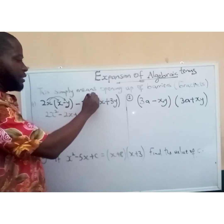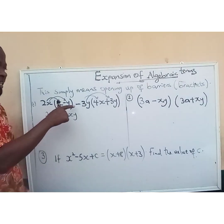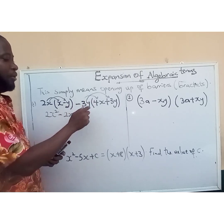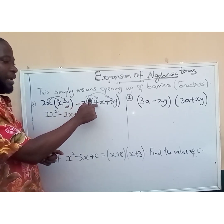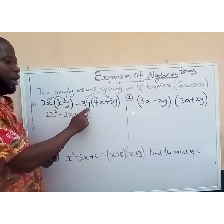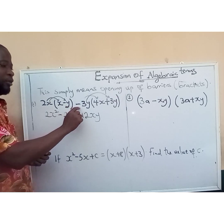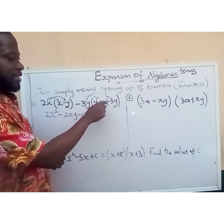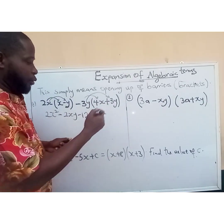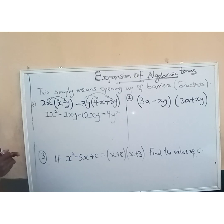Now we use the second outside term to multiply everything in its bracket. The sign here is negative, so minus times plus gives minus. 3 multiplied by 4 is 12, and y multiplied by x gives xy, so we have minus 12xy. Then minus times plus gives minus, 3 multiplied by 3 is 9, and y multiplied by y is y squared, giving minus 9y squared.